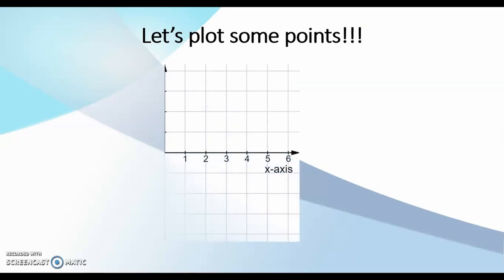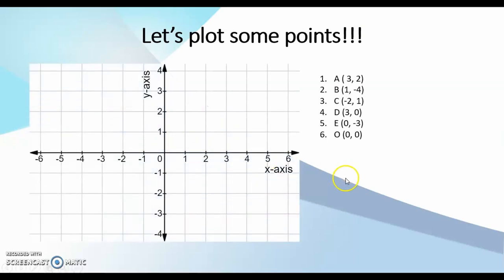Let's plot some points. Here I have six points. It is important to note that if our x coordinate is positive, it means that I move to the right. If my x coordinate is negative, I am going to be moving to the left. If my y coordinate is positive, it means that I'm going to move upwards. If, however, it is negative, I will be moving downwards.